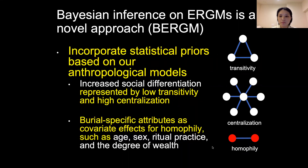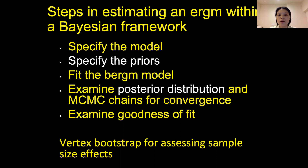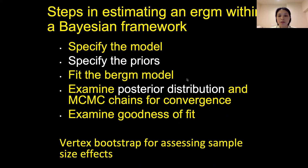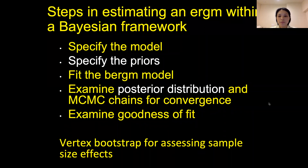There are steps for estimating an ERGM within a Bayesian framework. The first two steps are specifying the model and priors, as I just discussed. Once we specify the models, we fit the Bayesian ERGM to our archaeological data, then examine the estimates from the posterior distributions and MCMC chains for convergence to see if there is a good fit. Because we have different network sizes before and after European contact, we also use vertex bootstrap — a resampling method — for assessing sample size effects to ensure robust results.